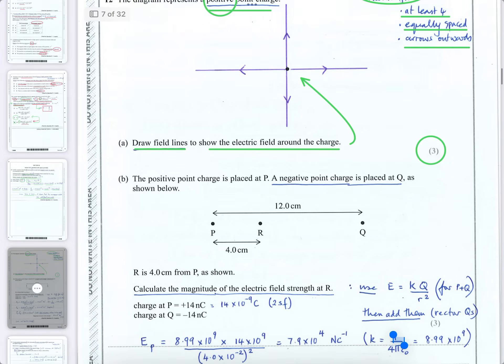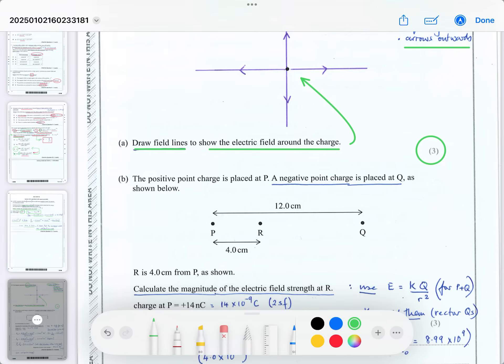Part B then says, the positive point charge is placed at P, so they're putting it over here, the charge that we just drew on the field for. And then a negative point charge is placed at Q here. So P and Q, one is negative, one is positive. And in between, they've drawn a point R. Now point R is just a point. It says R is four centimeters from P, as shown, and eight centimeters you can work out from Q.